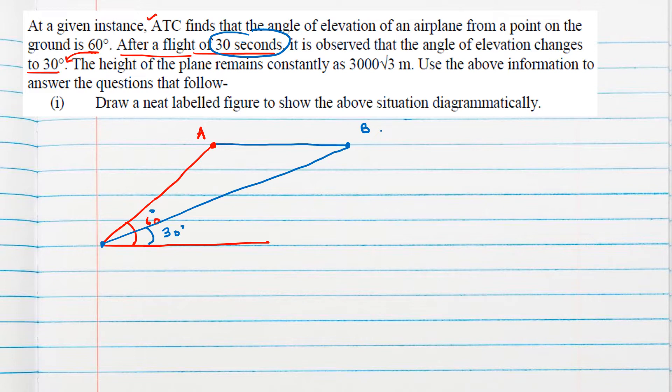The height of the plane remains constantly as 3000√3 meters. This height from here is 3000√3, and wherever the plane goes, the height will be constant. Then use the above information to answer the questions that follow. Draw a neat labeled figure to show the above situation diagrammatically. Let this point be O, then A, B, C, D. Considering the same diagram, we'll answer some questions.